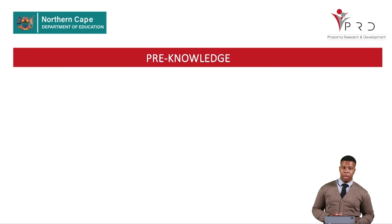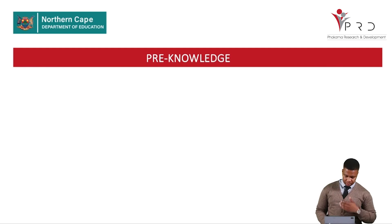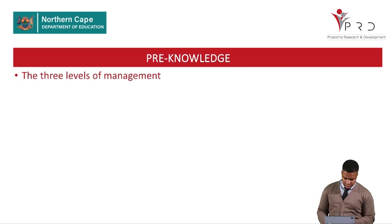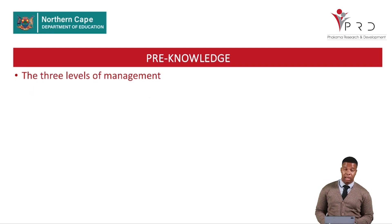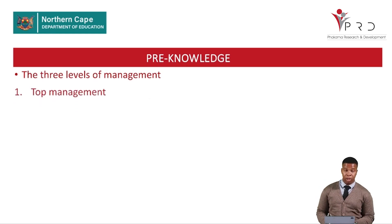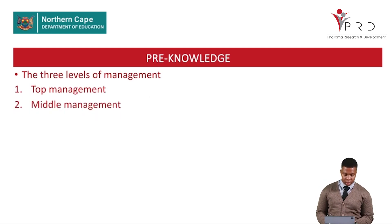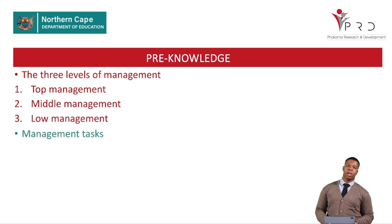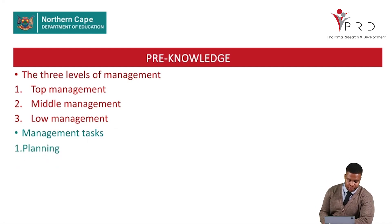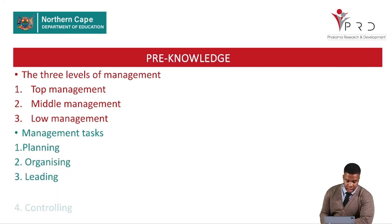This is what you should understand before you are ready for the prelim or final exam. In management, what you covered in your previous grade includes your three levels of management — top management, middle management, and low-level management — and your four management tasks: planning, organizing, leading, and controlling.